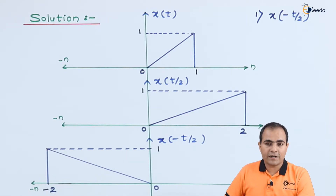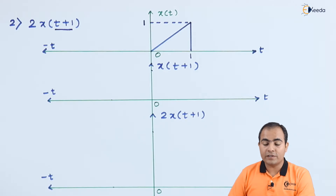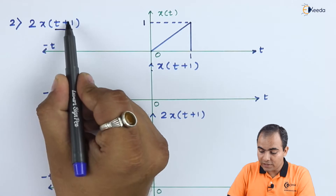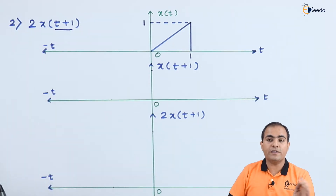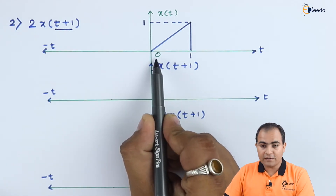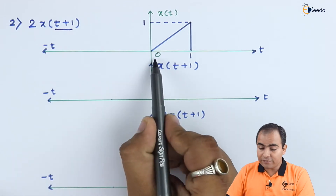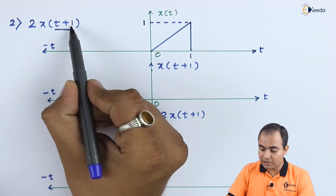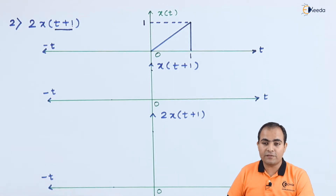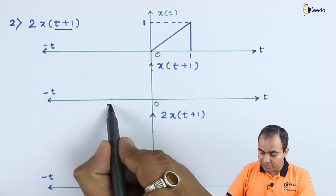Now we move to the second part. This function is advanced by 1. We can say it is advanced because the plus sign is mentioned — the function is shifted to the left-hand side by 1. This graph originally starts at 0, but after applying time shifting property, it will start from minus 1 because the graph is shifted to the left by 1.